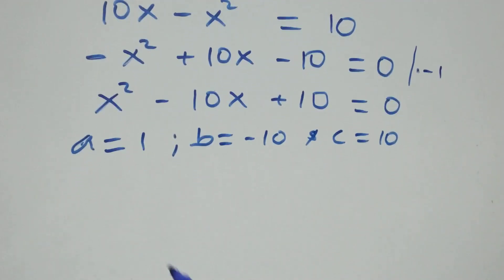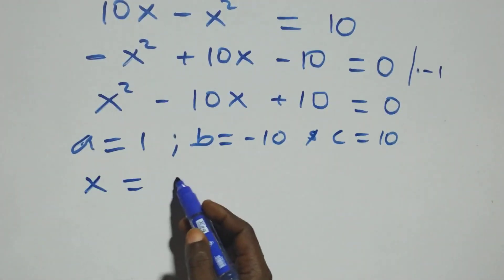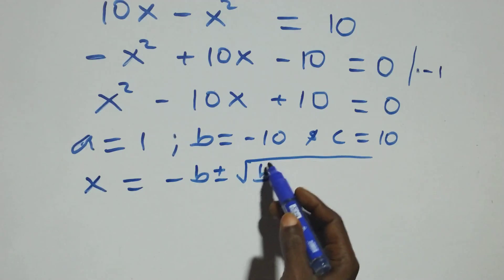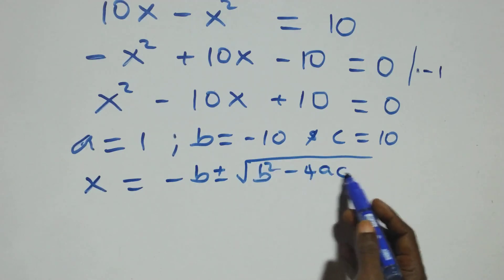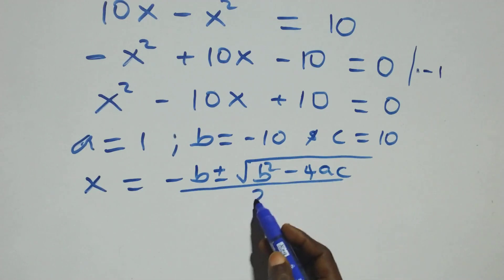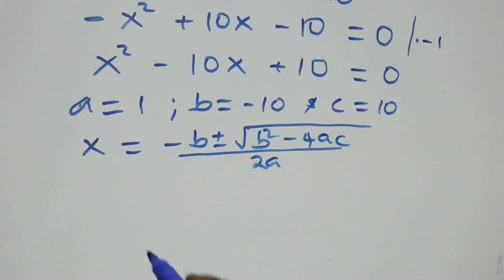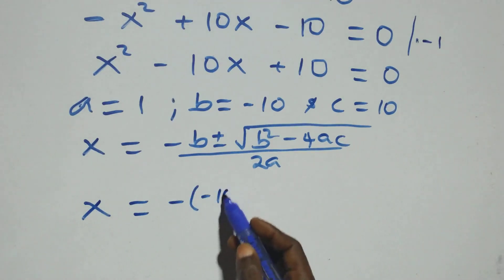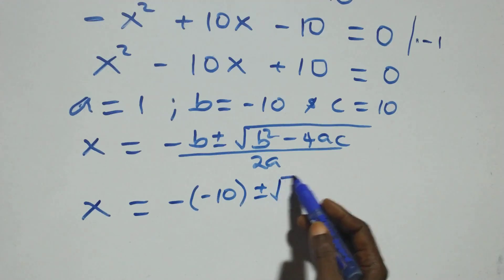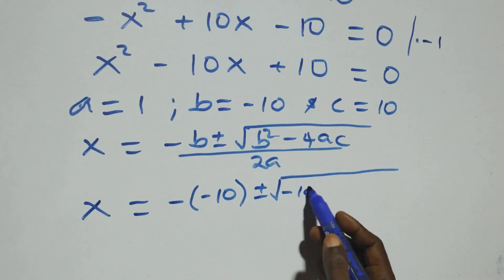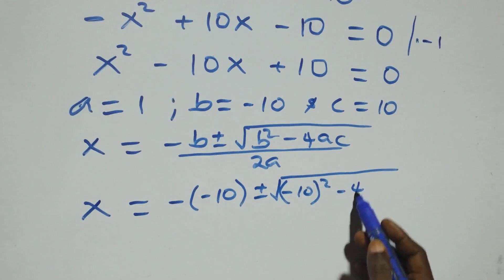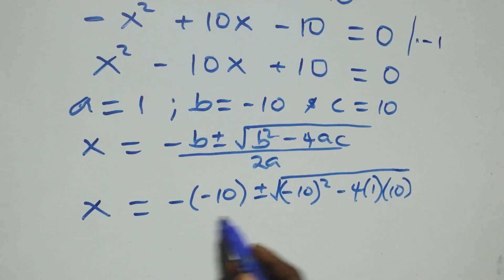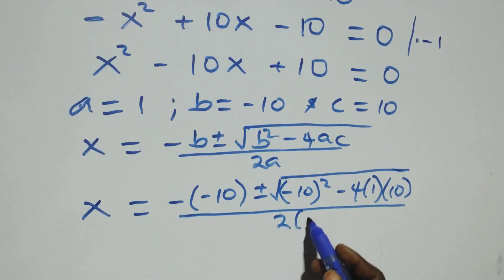Applying the quadratic formula, which is x equals minus b plus or minus square root of b squared minus 4ac over 2a. Substituting our values, x equals minus (minus 10) plus or minus square root of (minus 10) squared minus 4 times 1 times 10, all over 2 times 1.